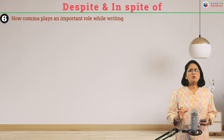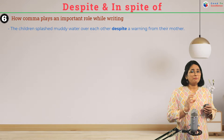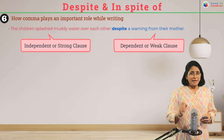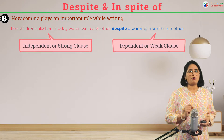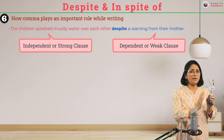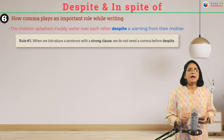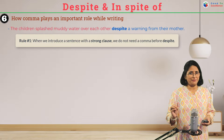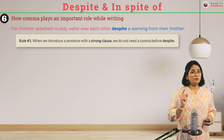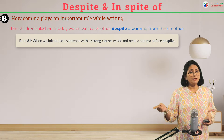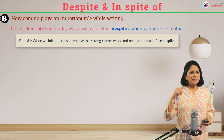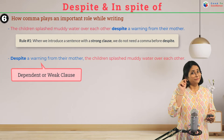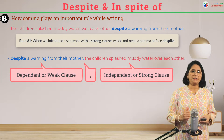Now let's look at how to use commas. 'The children splashed muddy water over each other despite a warning from their mother.' The main part is an independent or strong clause that can stand alone and conveys full meaning. When the sentence begins with a strong independent clause, we do not need a comma before 'despite.' But when we start with the dependent clause — 'Despite a warning from their mother, [comma] the children splashed muddy water over each other' — we need a comma after the dependent clause.